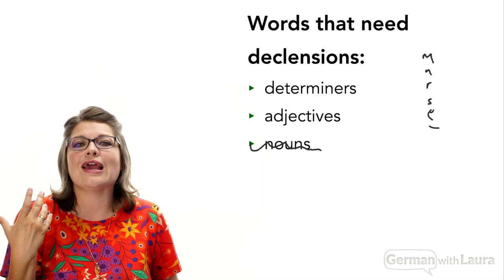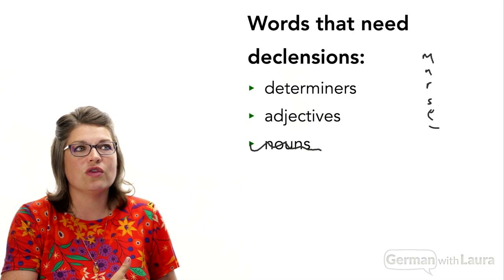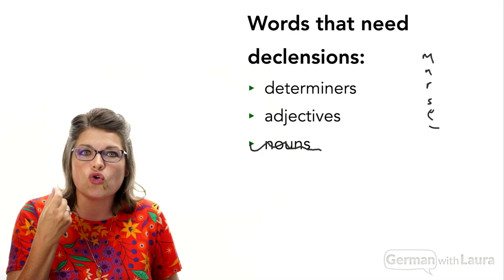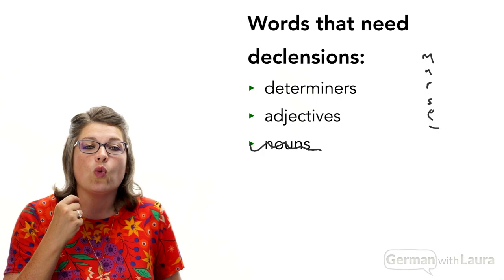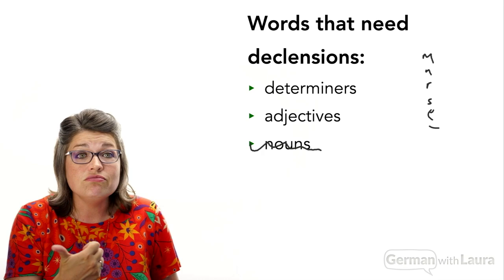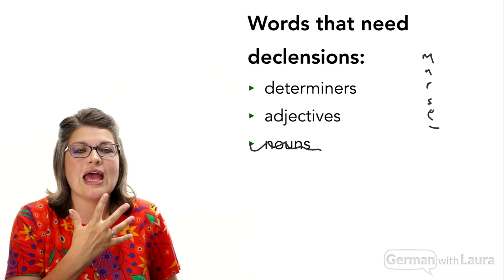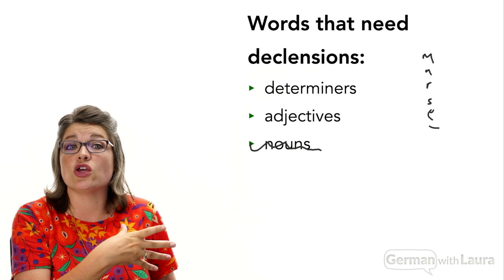Adjectives describe nouns in some way — the ball is big, red, shiny, smooth, fast. Determiners are any word that tells us which one or how many of the noun: the, a, this, that, some, many, few, all, one, two, three, ten — those are determiners. Also his, my, your — those are all determiners: which one or how many of the noun.